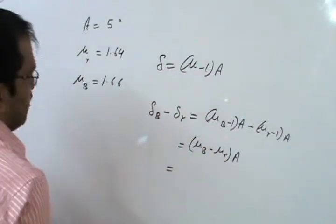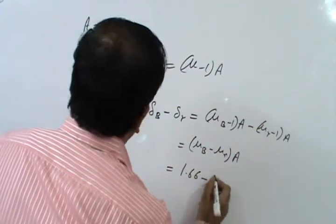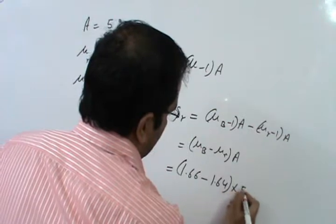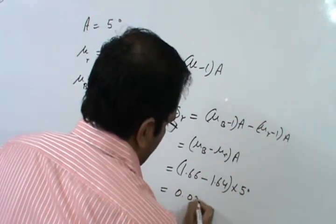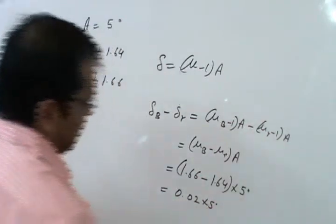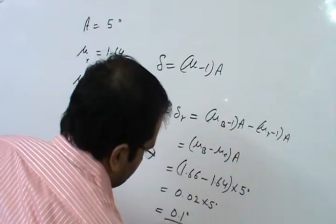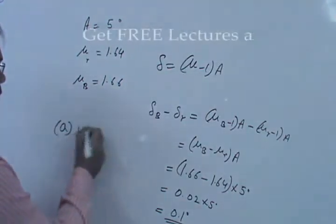Putting values we get 1.66 minus 1.64 into 5 degrees, that is 0.02 into 5 degrees or 0.1 degrees. So option A is correct.